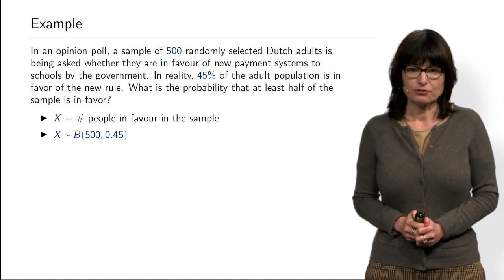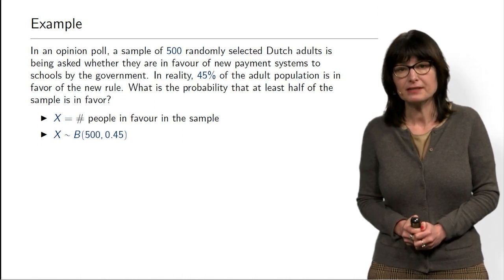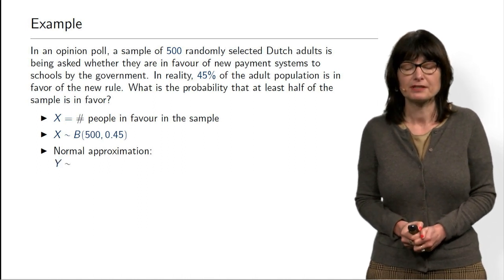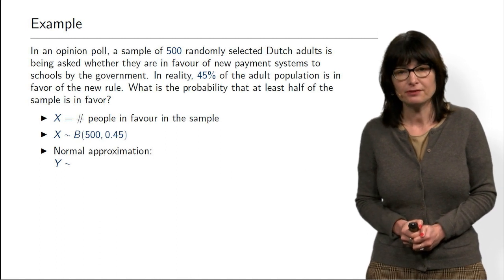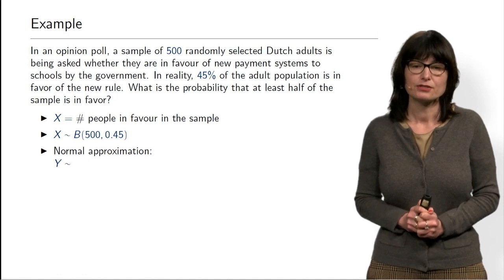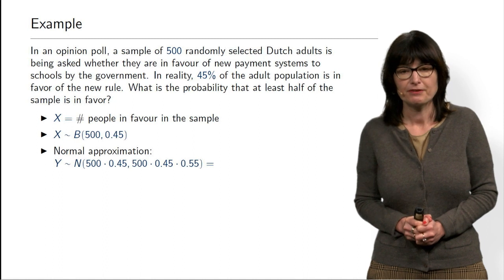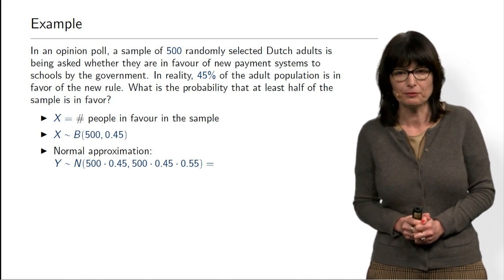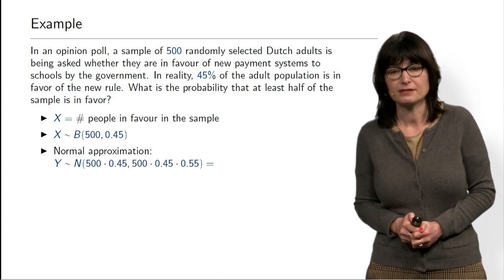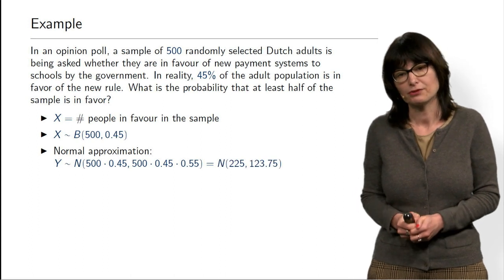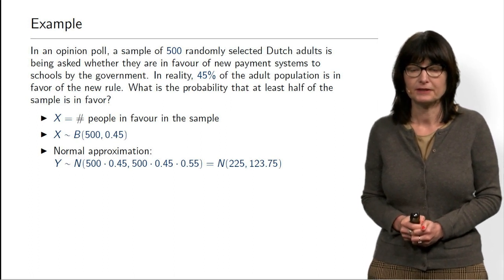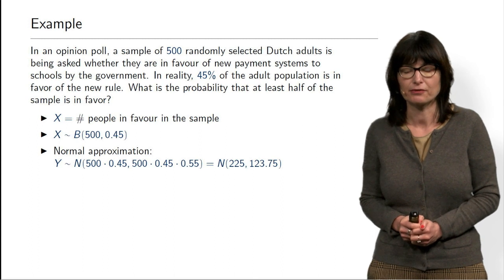Since 500 is a large N, we can approximate this binomial distribution by normal. We approximate X by a normal random variable Y with parameters mu = 500 × 0.45 and sigma squared = 500 × 0.45 × 0.55. Computing these numbers: mu is 225 and sigma squared is 123.75.